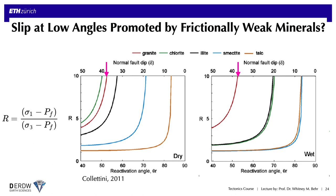Granite cannot activate slip on faults less than 40 degrees regardless of wet or dry conditions. If you examine a material like chlorite, the green curves, it's quite strong under dry conditions but becomes very weak under wet conditions — weak enough that it could potentially explain fault slip at 20 degrees, something like what we see on the Whipple detachment, which is observably chlorite-rich. Even weaker minerals, clay minerals like smectite and also talc, are very weak and could also explain slip on these structures. So it's possible that these more exotic rock and mineral types on low angle detachments help explain their ability to slip at these low angles, but more work needs to be done to really test this globally.